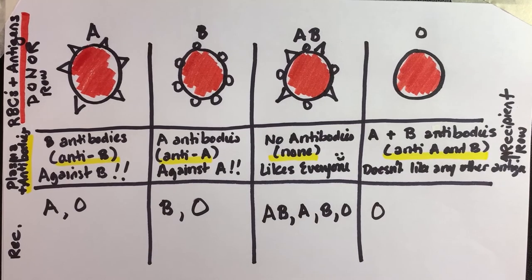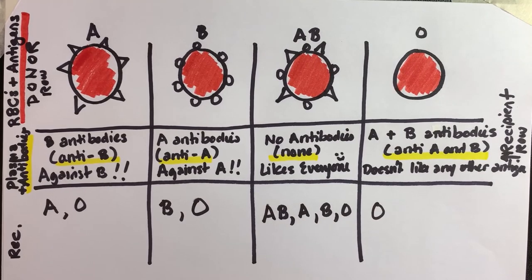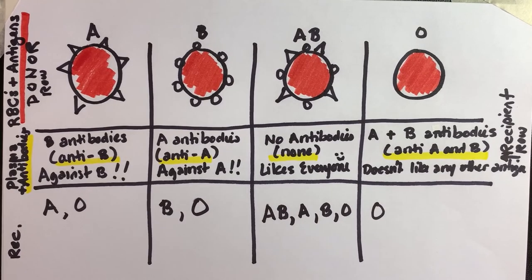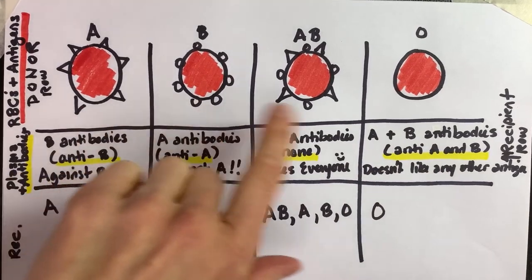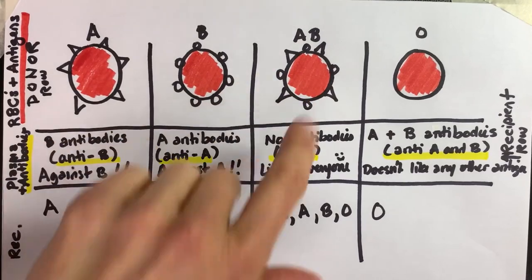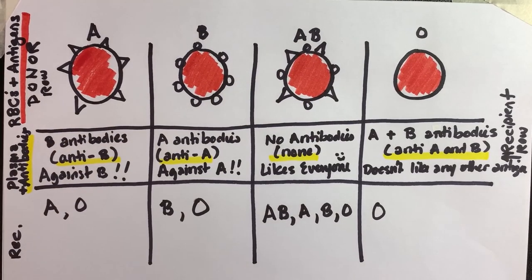So Type O can only receive O, even though it's the most common blood type. You can see why — it doesn't like A's and it doesn't like B's, and all other blood types have either A, B, or both A and B on them. We'll do the Rh factor in another video.